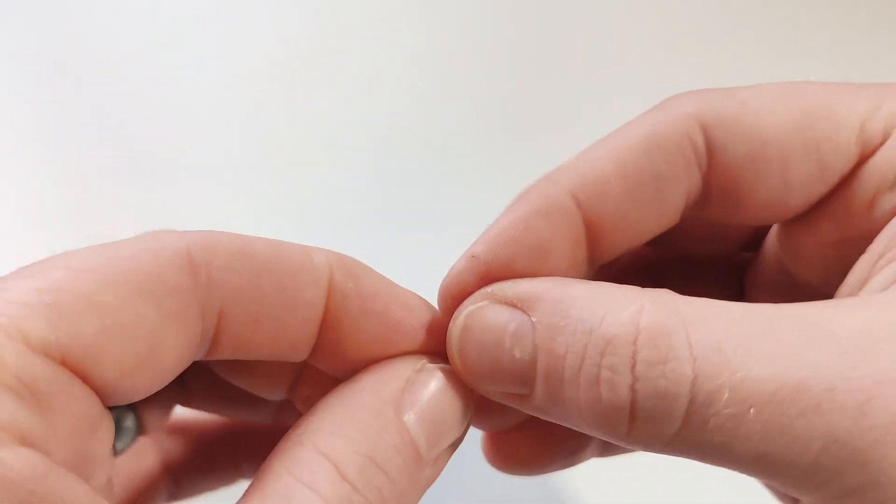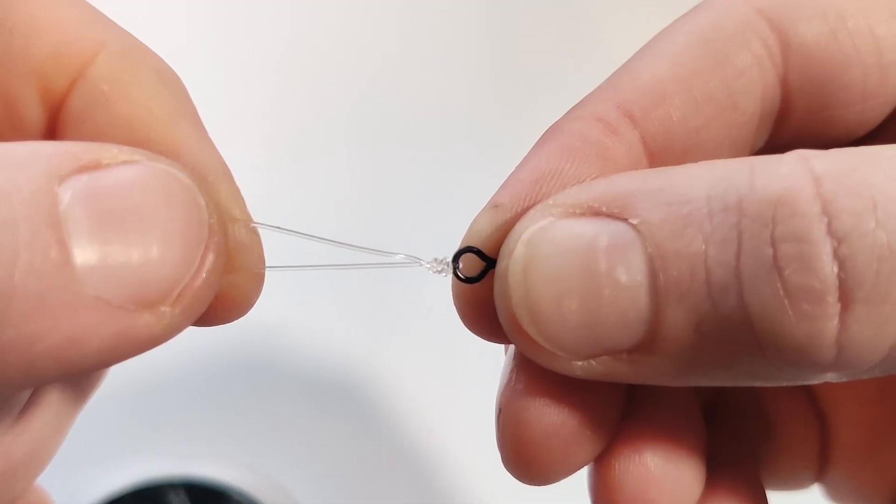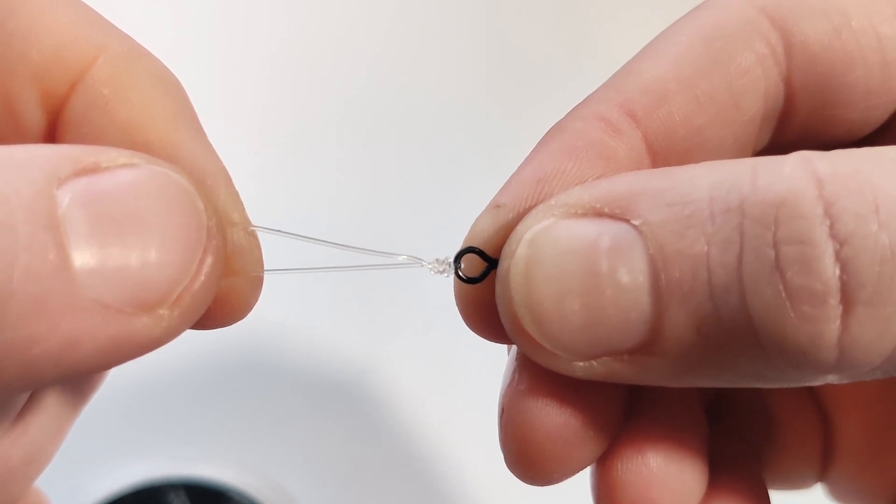Now take the half swivel and attach it using a four turn grinner knot. Take your time when tying the four turn grinner knot to ensure it's nice and neat and moisten the knot then pull it down tightly with the puller tool.